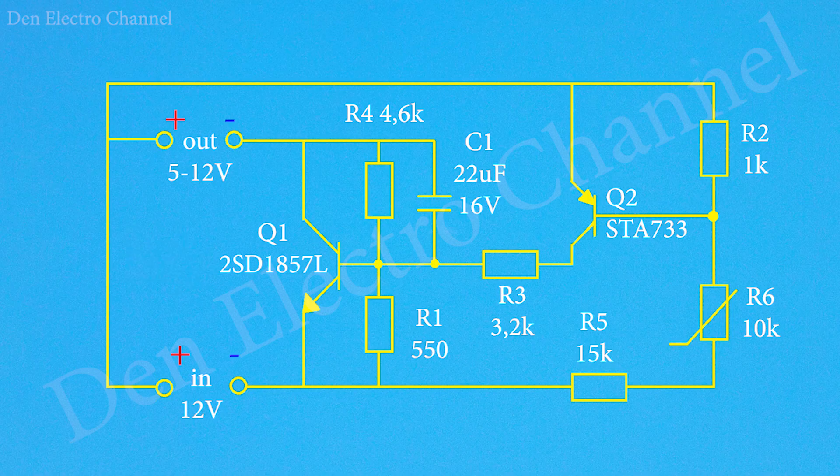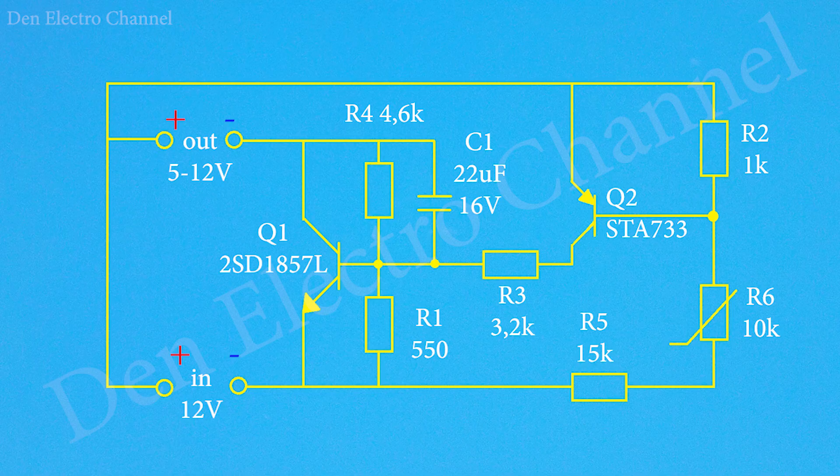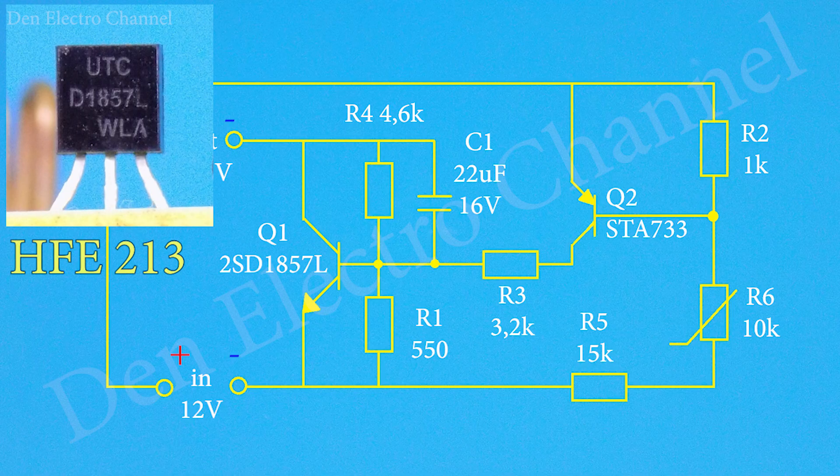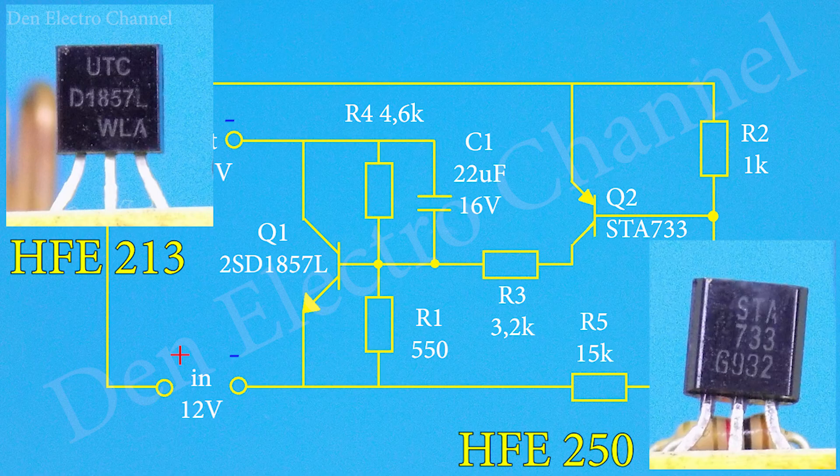If you do not have such transistors then when replacing them, you should pay close attention to the gain, since in this circuit it is of great importance. For transistor Q1 it was 213 and for Q2 250. If the gain of the transistors is much lower, then the transistors will not open completely and the fan will not spin at maximum speed.